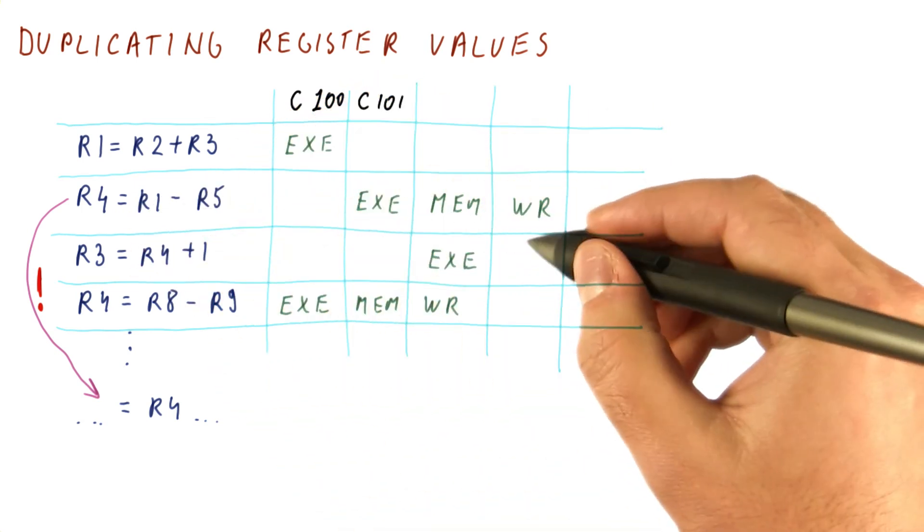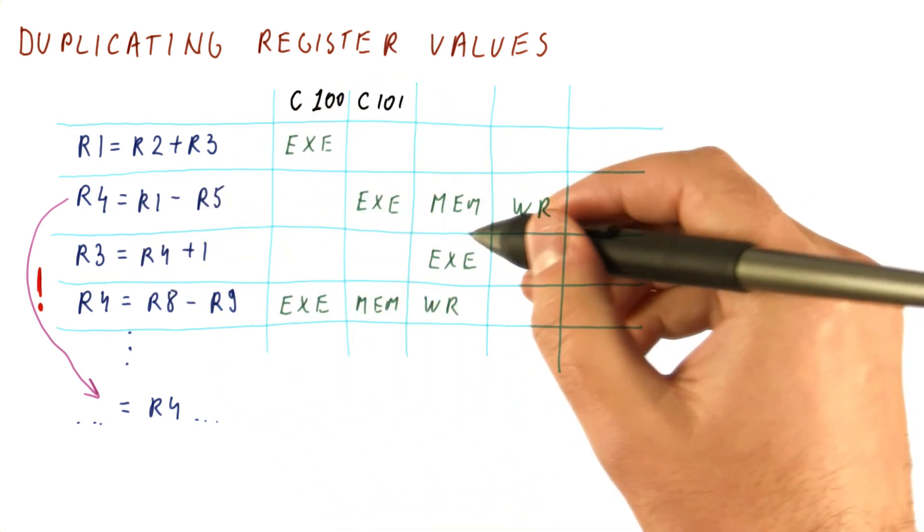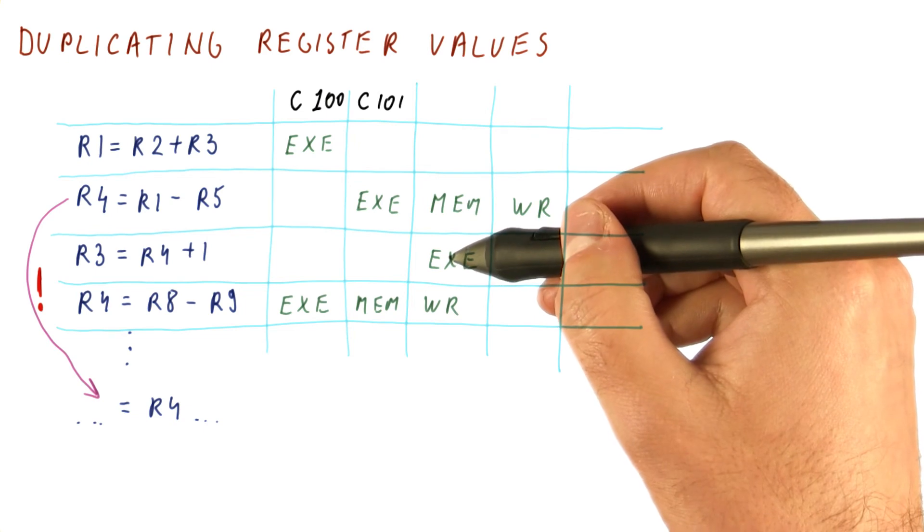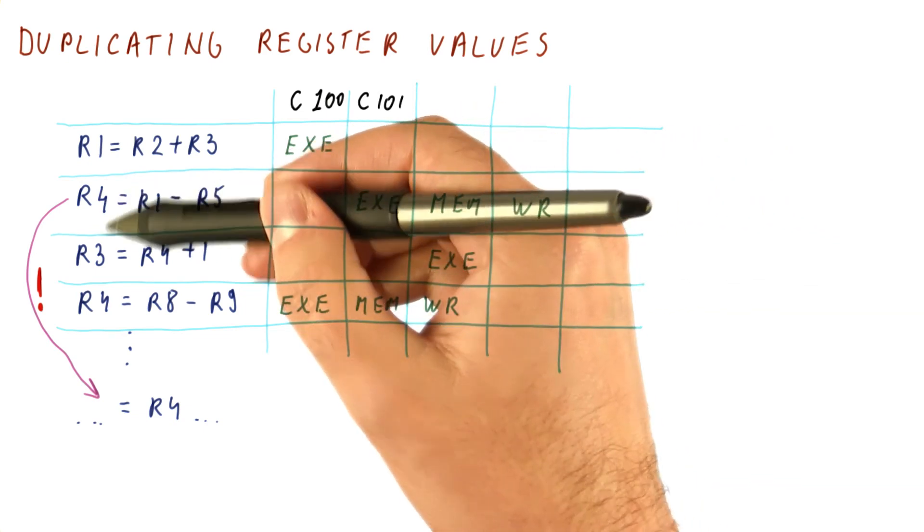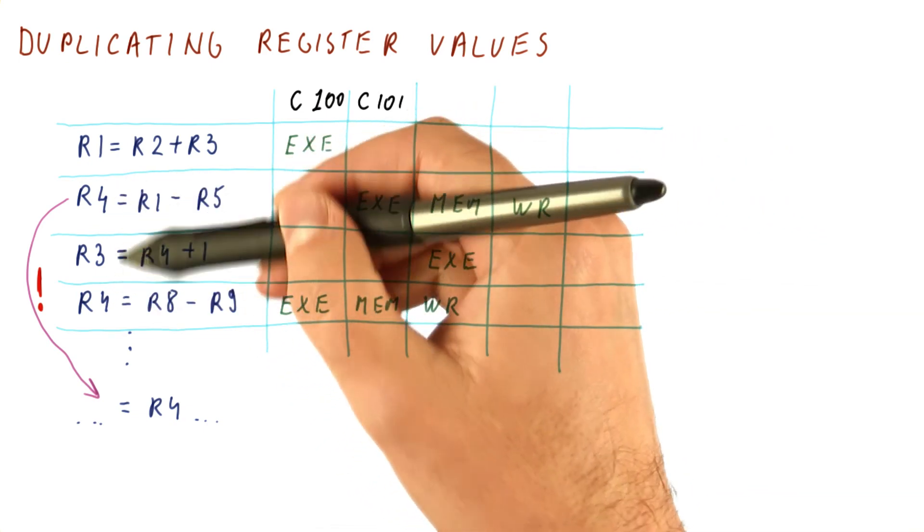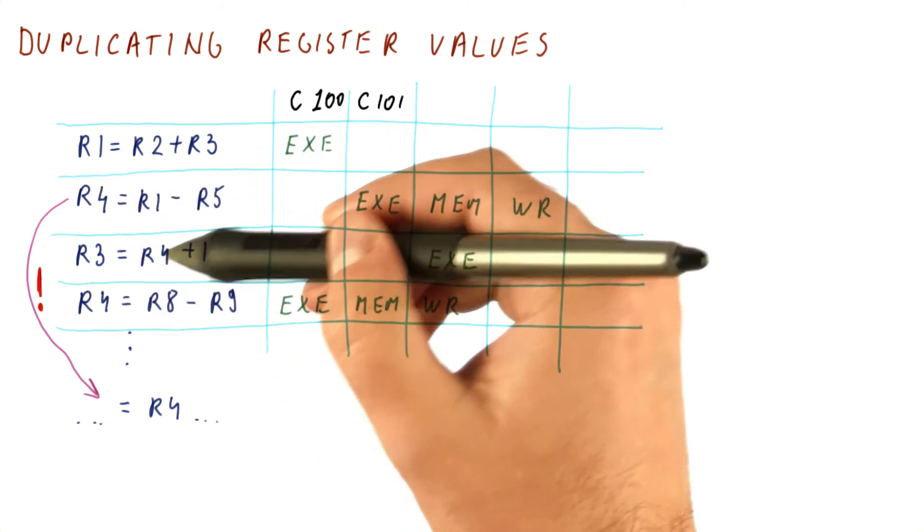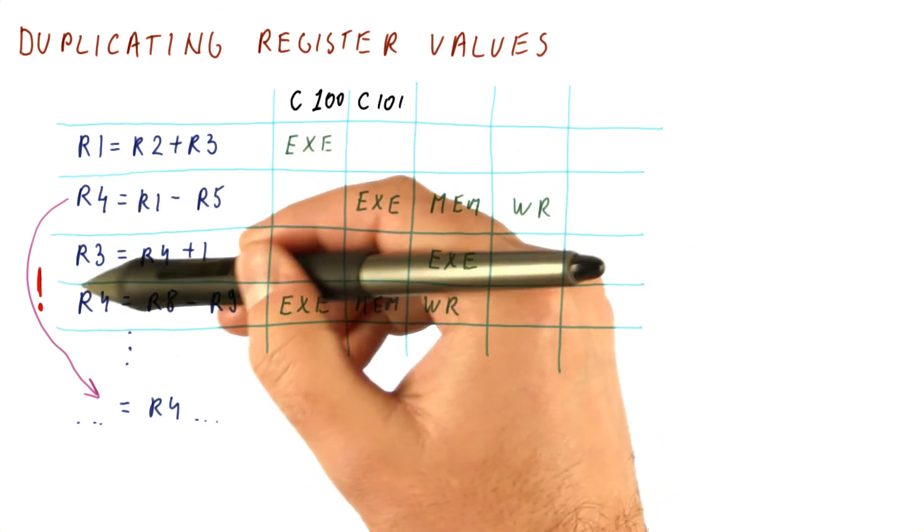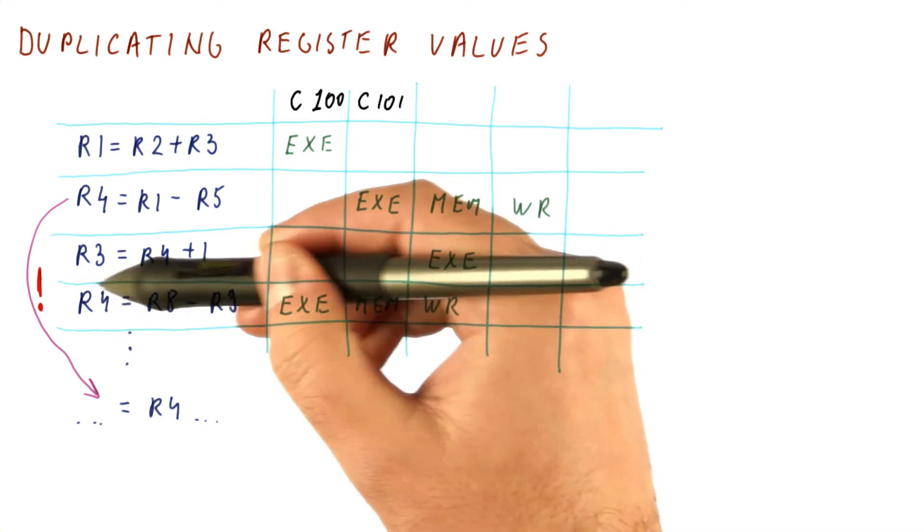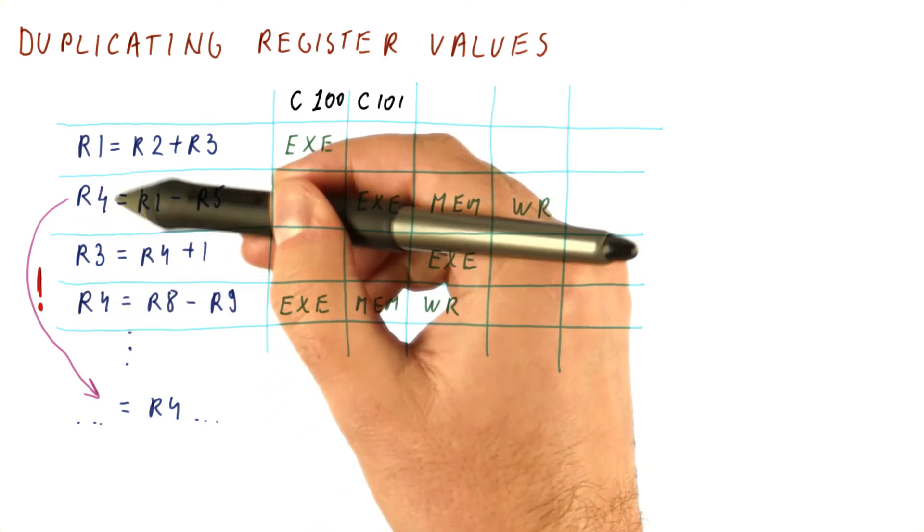Meanwhile, this instruction here, when it executes, will look for versions of R4 and again find that there are really two versions that it might be using, R4 here and R4 here. But because this one is coming after this instruction, it should be ignored, and thus we use this value.